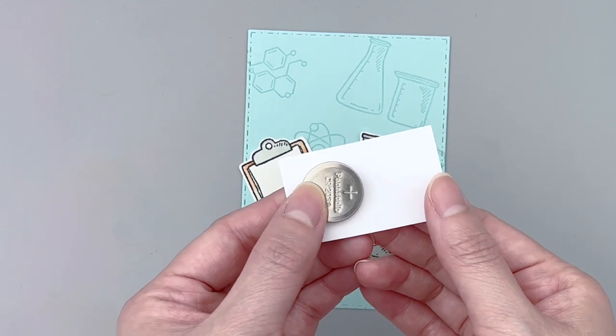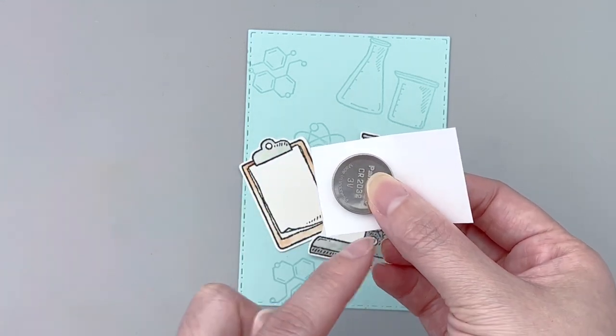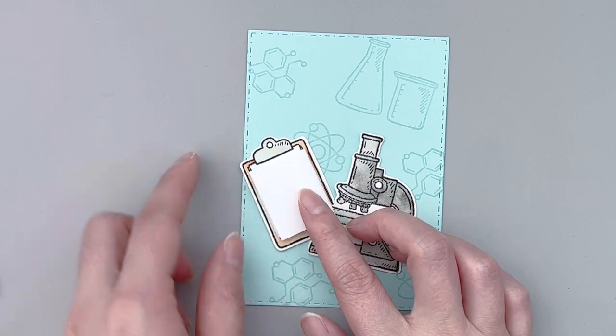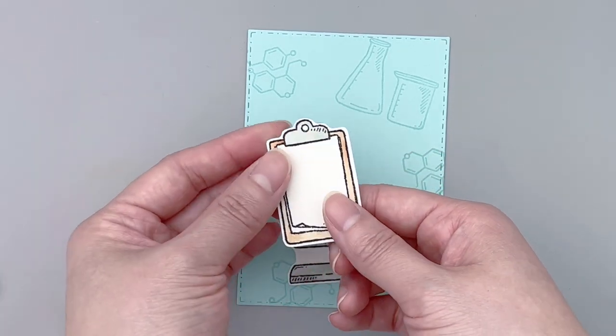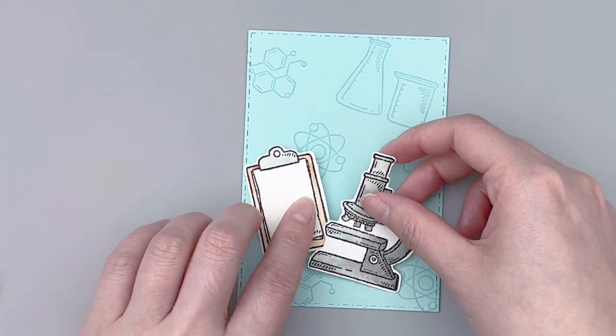Typically when you're making a light-up card, you would use a larger piece of cardstock as the front panel and you can hide the battery holder and the circuit tape behind that big cardstock panel.